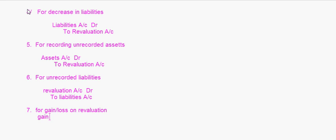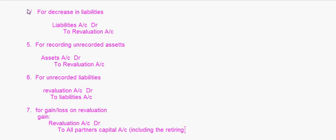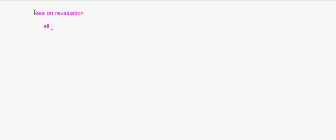If there is a gain on revaluation, it will be: Revaluation Account debit to all Partners Capital Accounts — including the retiring partner — and profits are distributed in the old ratio. If there is a loss on revaluation, it will be: All Partners Capital Accounts debit to Revaluation Account.